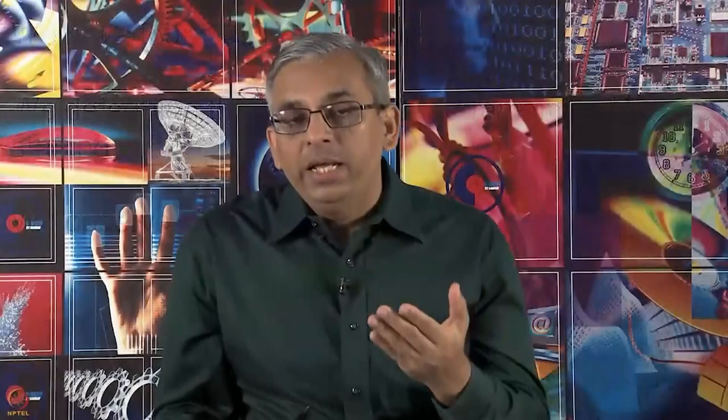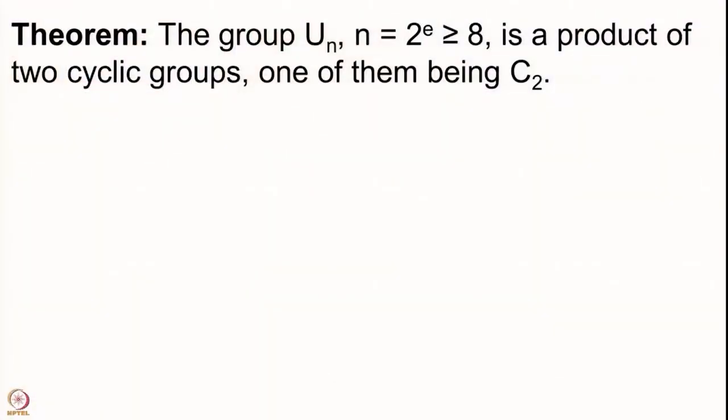We would like to show that when n is a power of 2, the group of units is almost a cyclic group — it is not really cyclic, but it is a product of 2 cyclic groups, one of them being of order 2. The result we are going to prove is that U(n) for n = 2^e ≥ 8 is a product of two cyclic groups, one of them being C₂.